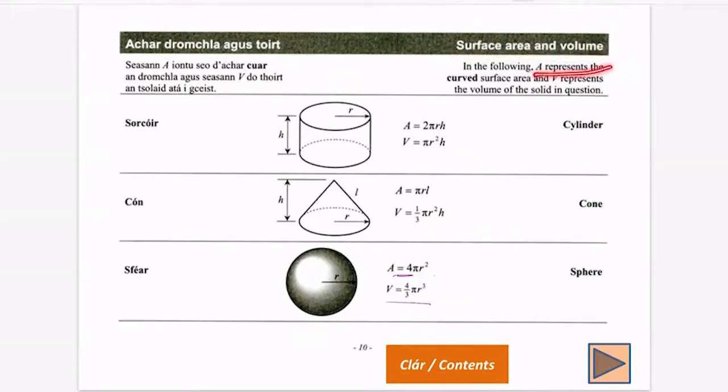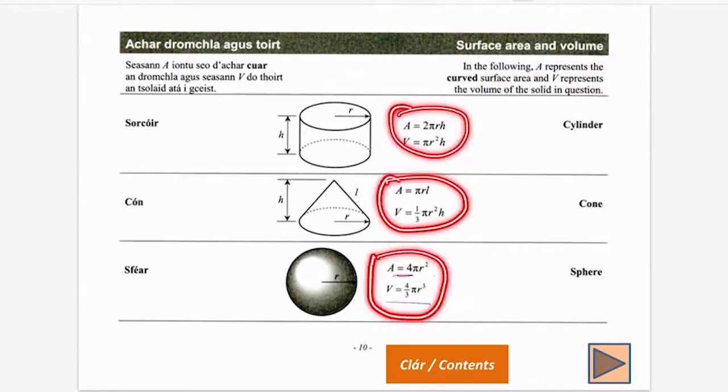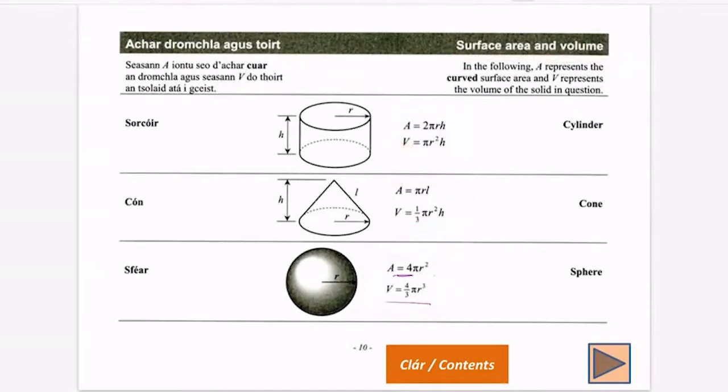In the following, A represents the curved surface area, V represents the volume. So you see for all of them, there's two formulas - one for surface area, one for volume. So go to your shape, whatever shape's in your question, and then find the right formula.